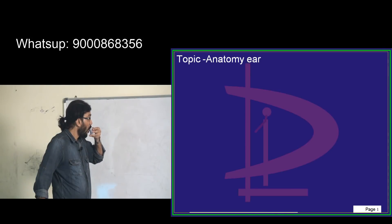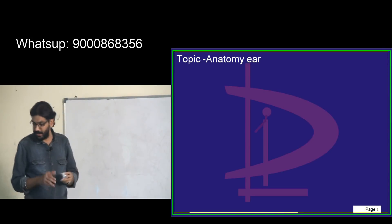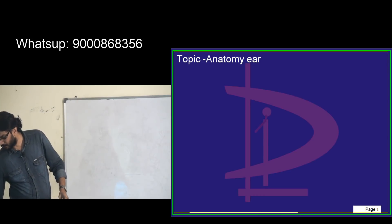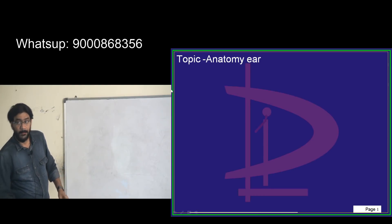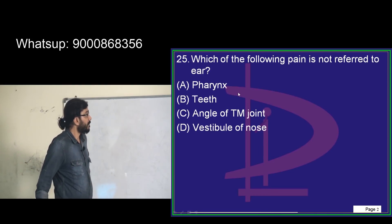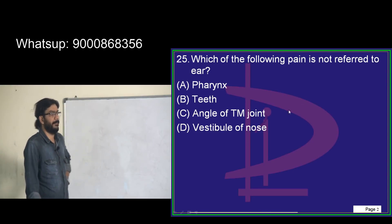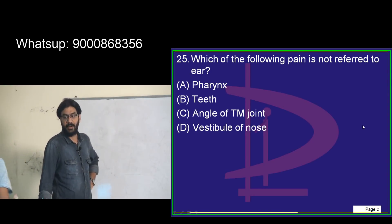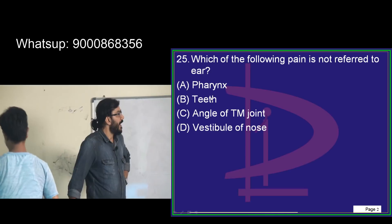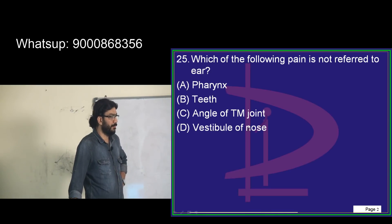Anatomy of the ear - the first question: which of the following pain is NOT referred to the ear? Options include pharynx, teeth, angle of the TMJ, and vestibule of the nose.